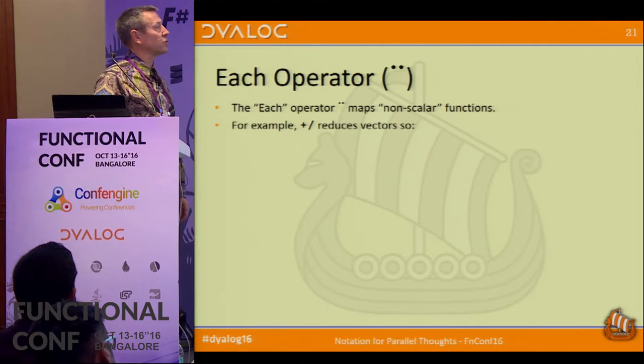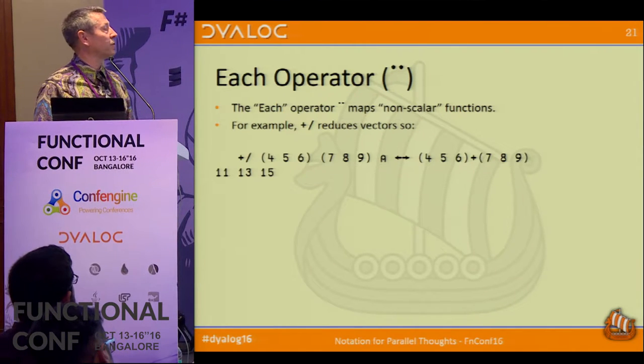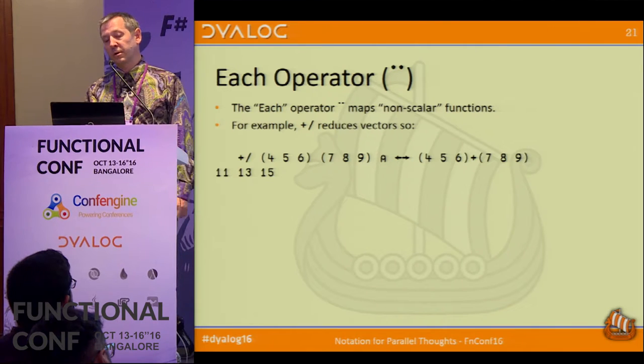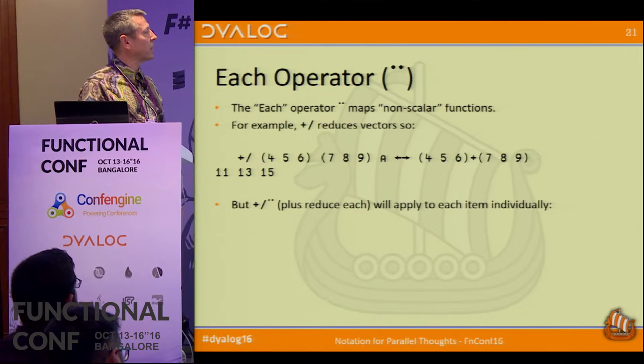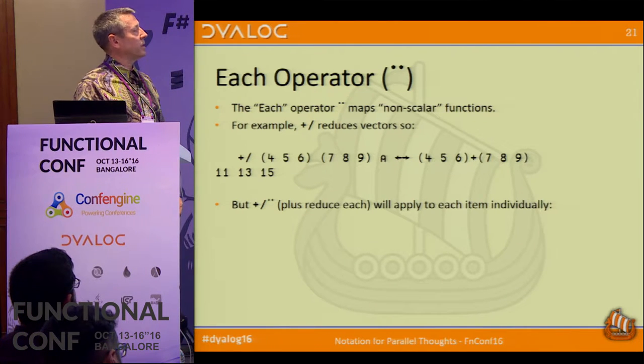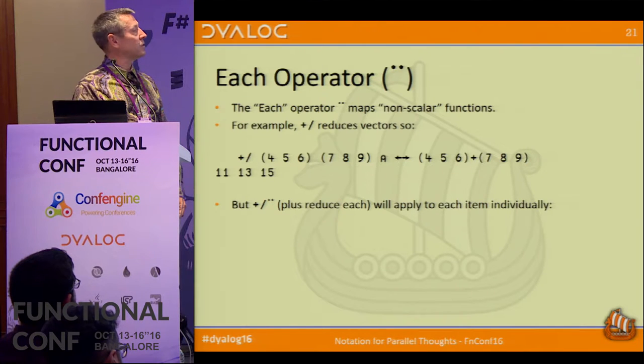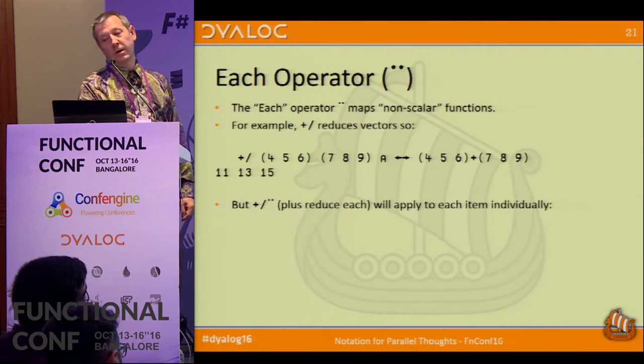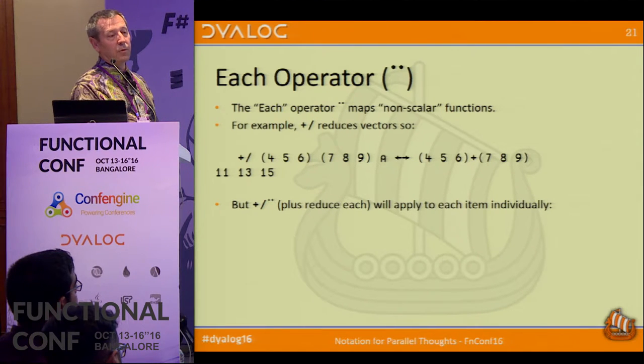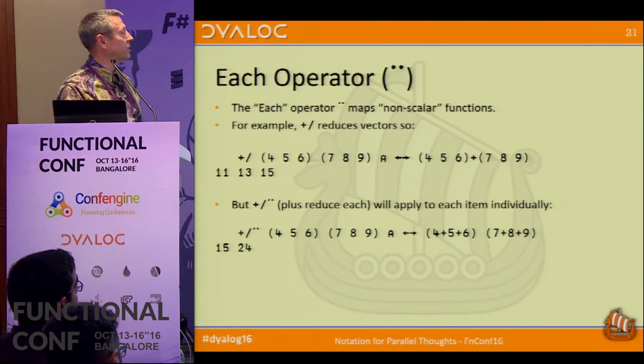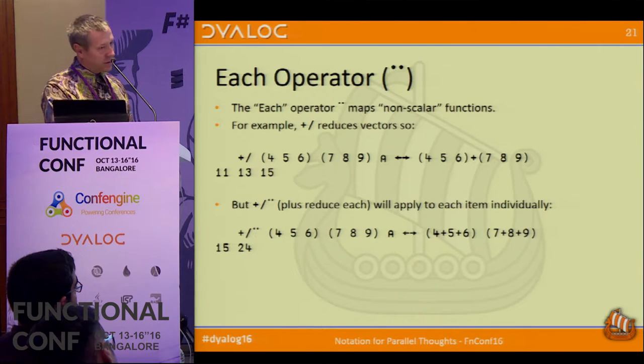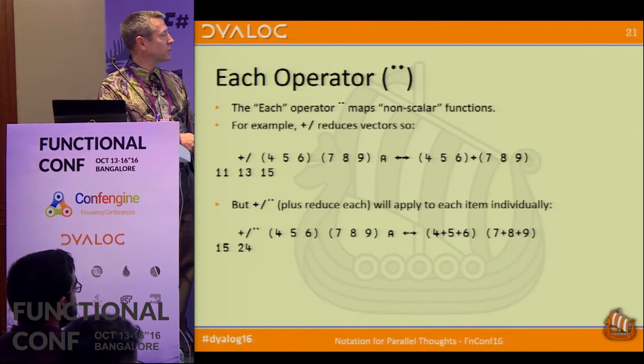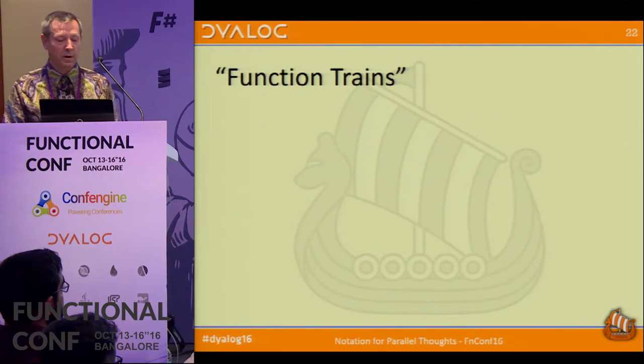So we've seen that map is implicit in the scalar functions. If you want to use any of the mixed functions or you want to do something slightly out of the ordinary, you may need to explicitly use what we call each, which I guess you would call map in most functional languages. So if we did the plus reduce of this, it's a two-element vector. So the plus goes in between the two items and we get four, five, six plus seven, eight, nine. But if what we wanted to do was actually add up to a sum of each of these vectors, we would say plus reduce each and then we would go down a level and apply the plus reduction to four, five, six and get 15, seven, eight, nine and get the next one.